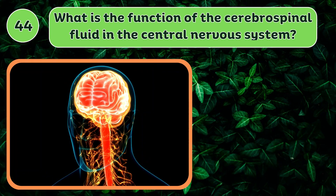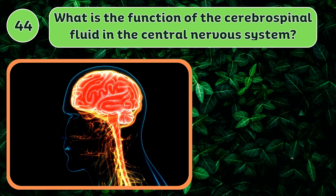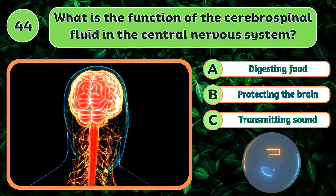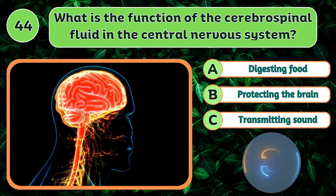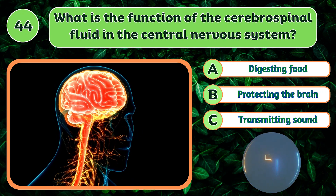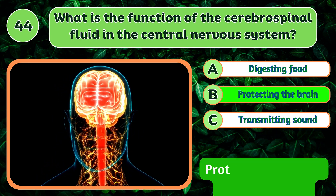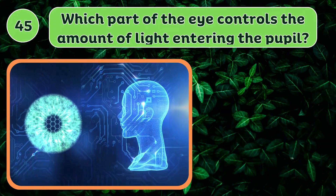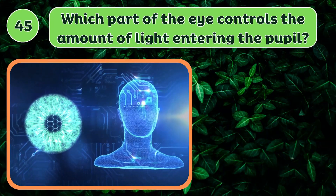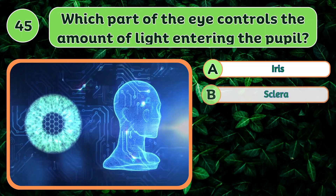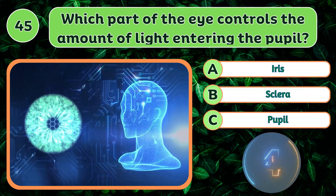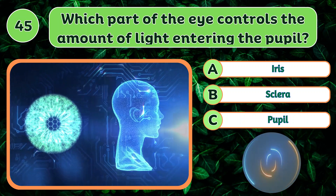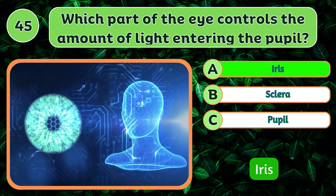What is the function of the cerebrospinal fluid in the central nervous system? Protecting the brain and spinal cord. Which part of the eye controls the amount of light entering the pupil? Iris.